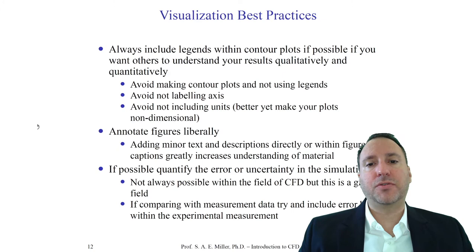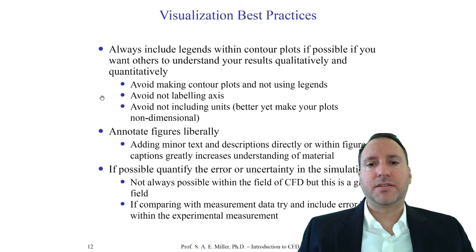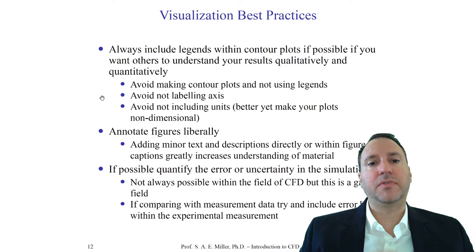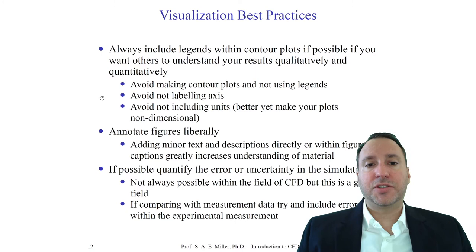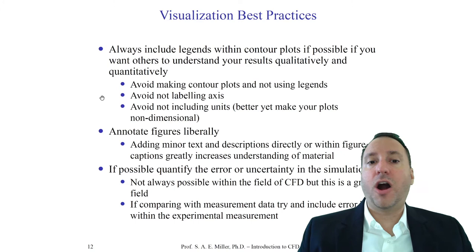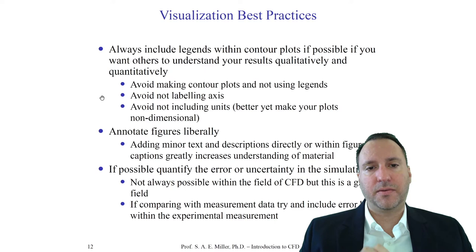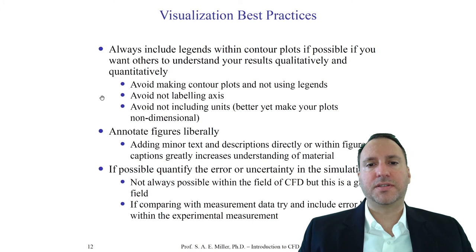Furthermore, if you have axes in your plots, avoid not labeling them. Every axis should have the variable like x and the units, such as meters. If it's non-dimensional, write the non-dimensional value like Reynolds number — write Re, but don't put units. Typically, non-dimensional numbers are not written in italic. Variables like x, u, p are written in italic. You should be consistent between the labeling of your plots and the data and writing in the body of your paper. Do not include units if it's non-dimensional. Always, always include units in the axis of plots or legends of contours if units are appropriate.